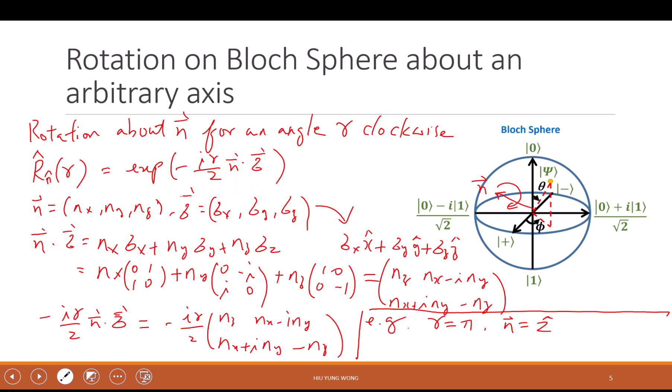n is of course nx, ny, nz, the unit vector in 3D space, and σ, the Pauli vector, is σx, σy, σz. We are very comfortable that if even complex numbers can be coefficients, then there's nothing special about having matrices as coefficients.